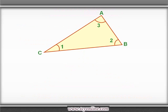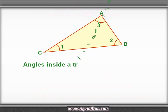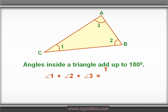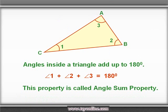The angle sum property says: if we add all the three angles in a triangle, it will give us a total measure of 180 degrees. See in the picture — if we add angle 1, angle 2, and angle 3 in this triangle, it will give us a measure of 180 degrees. This is known as the angle sum property.